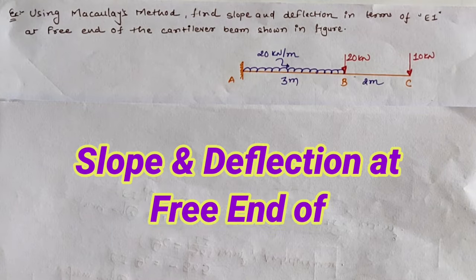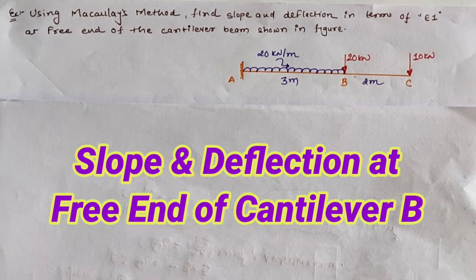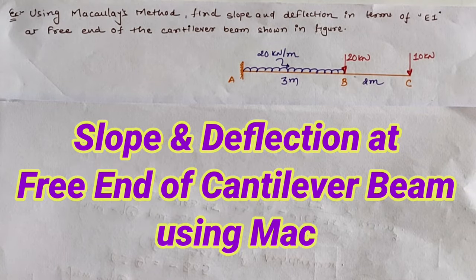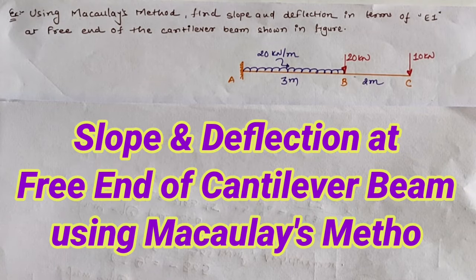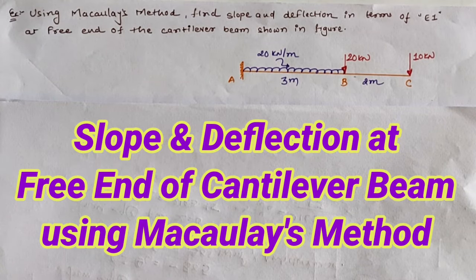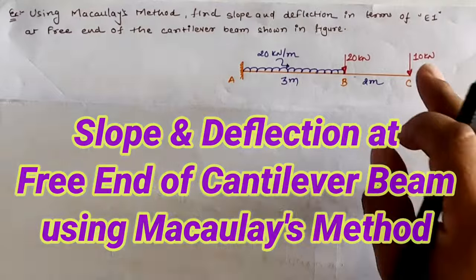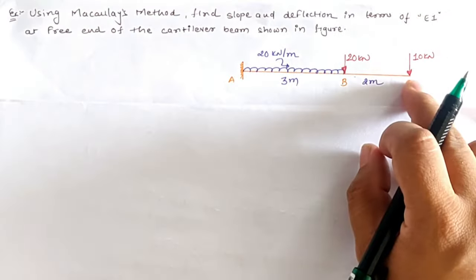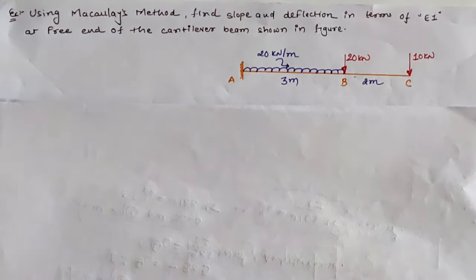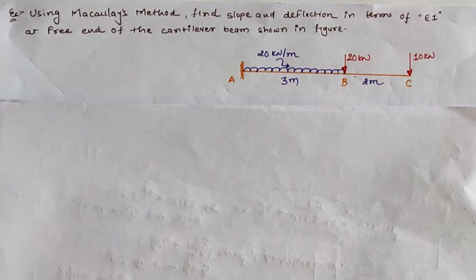Hello friends, today we are going to analyze the given cantilever beam using Macaulay's method and we are going to calculate the slope and deflection at the free end, which means at location C.